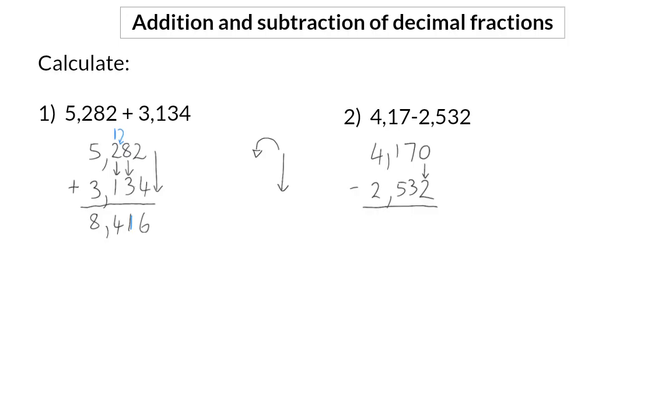Now I want to say 0 minus 2, which is not possible. So I'm going to borrow 10 from my tenths, which will become 60. So now I can say 10 minus 2 is 8.